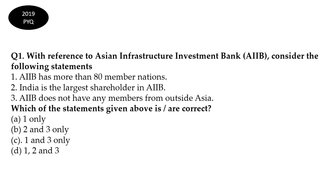Question one: With reference to Asian Infrastructure Investment Bank (AIIB), consider the following statements — AIIB has more than 80 member nations; India is the largest shareholder in AIIB; AIIB does not have any members from outside Asia. Which statement is correct? The correct answer is Statement 1 — AIIB has more than 80 member nations. Yes, that is absolutely correct.